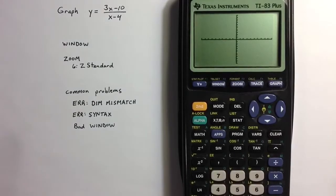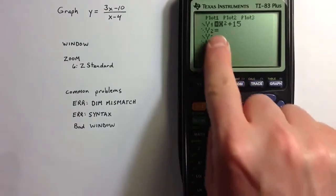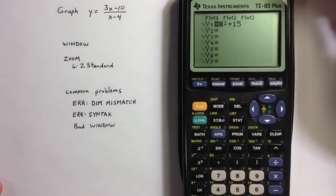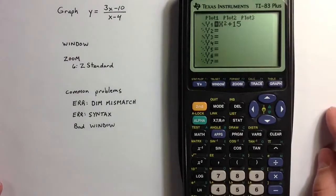We aren't going to see anything because x squared plus 15 is a parabola that opens upward and is raised 15 units above the x axis.